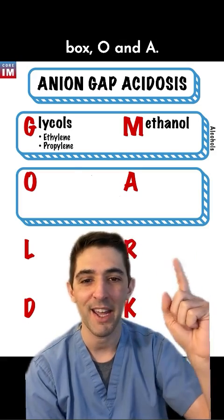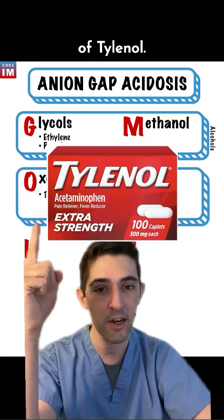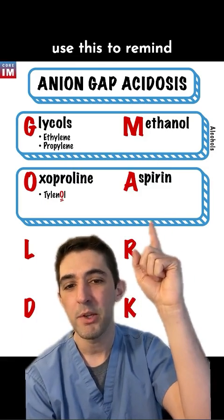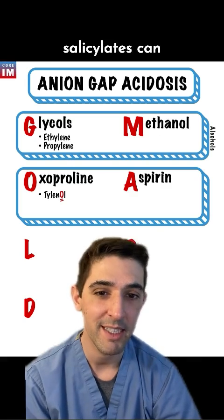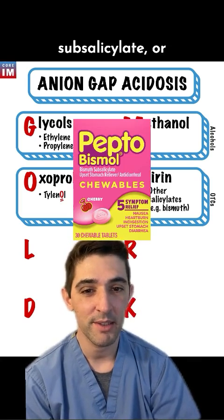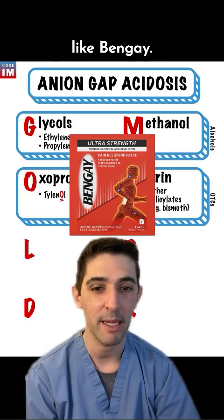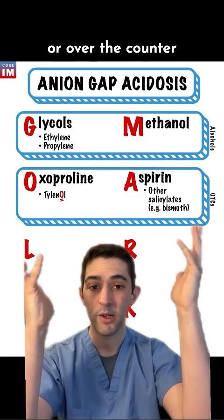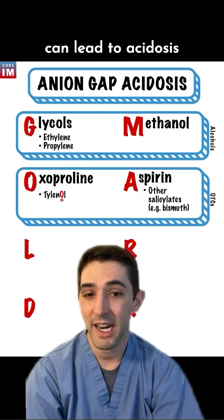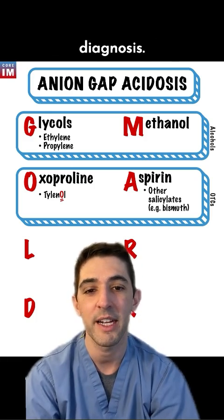Moving down to the next box: O and A. O is for oxyproline — a metabolite of Tylenol (stress the O to make it stick). A is for aspirin, but use this to remind yourself that other salicylates can cause an anion gap acidosis too, including bismuth subsalicylate (Pepto-Bismol) and methyl salicylate, found in topical pain medications like Bengay. This is the OTC, or over-the-counter medication box. Over-ingestion of these medications can lead to acidosis, and sending an early serum tox screen is important for an accurate diagnosis.